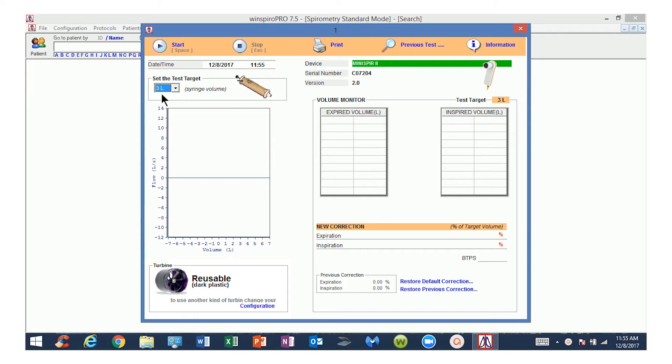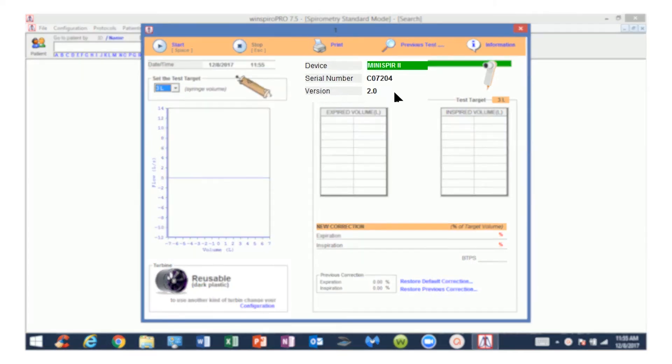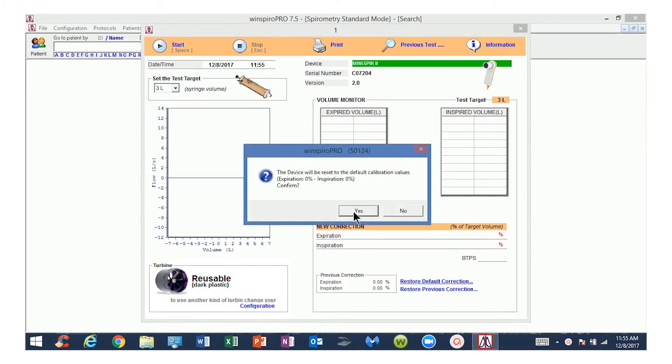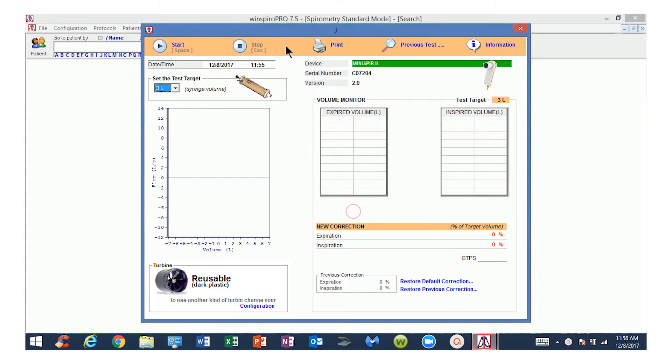In this video, we are using a 3-liter syringe. To the right of that, you will see the device that is connected with its serial number and firmware version. In the lower right corner, click Restore Default Correction and prepare the syringe by pulling the piston out fully.